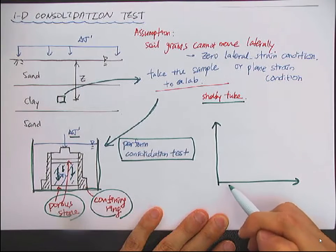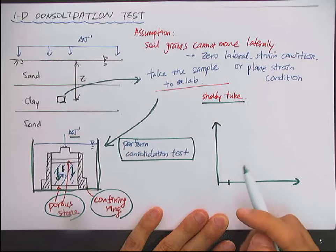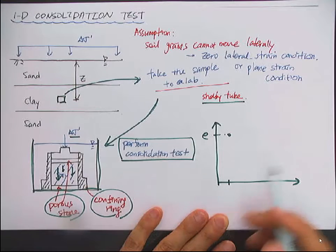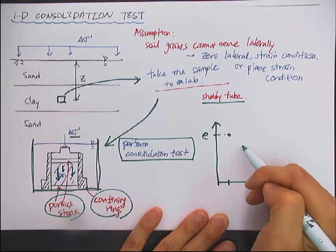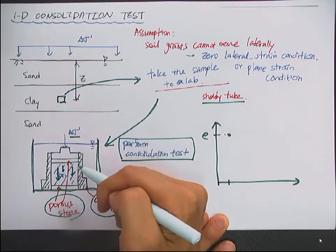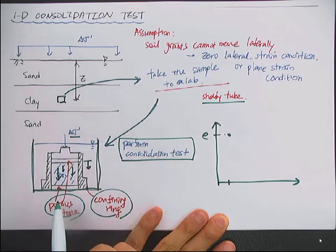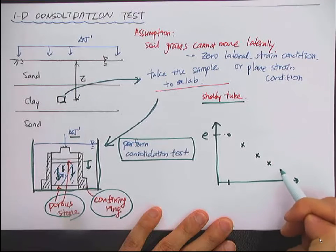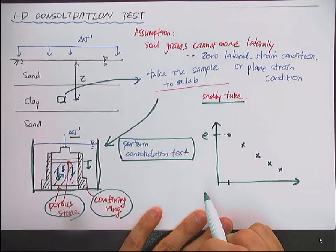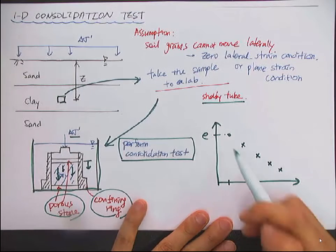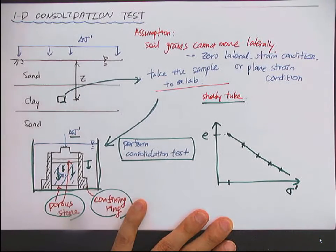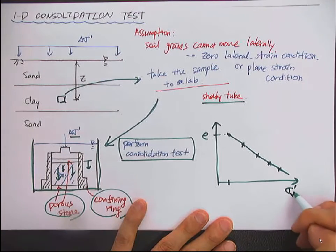First, you apply a certain amount of stress — maybe step loading one — and there will be a void ratio corresponding to that stress amount. Then you increase the stress, and because of the additional stress, the height will decrease, which means you have a decrease in void ratio. You repeat the loading steps — to about six steps — and you get the curve of void ratio versus effective vertical stress.